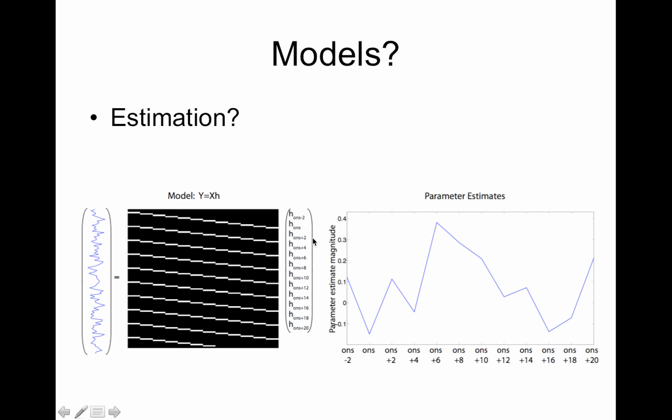And then these parameters, this is the beta vector here, if you plot those out you get this over here which is your estimate of the shape of the hemodynamic response. And there are different things you can do to stabilize this.